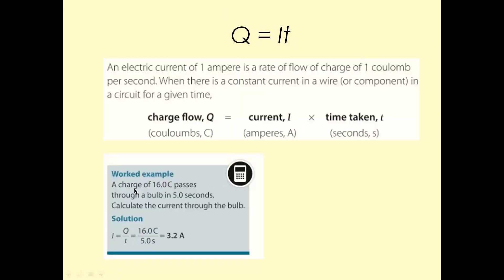If you look at this exam question here, a charge of 16 Coulombs passes through a bulb in five seconds. Calculate the current through the bulb. So rearrange the equation to make I as a subject or current as a subject. So current which is I is going to be Q over T. Charge they've given us in the question, 16 Coulombs, and time they've given us is in seconds. Put these values in the calculator and you'll get the answer. In this case, it's 3.2 amps.